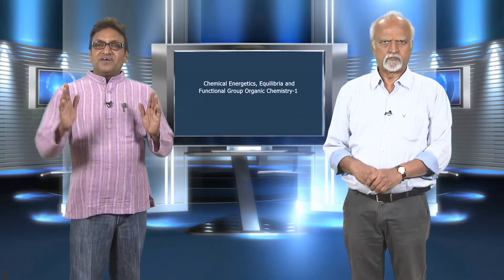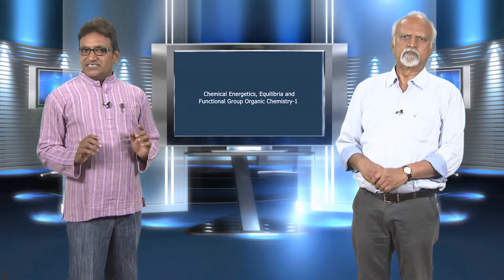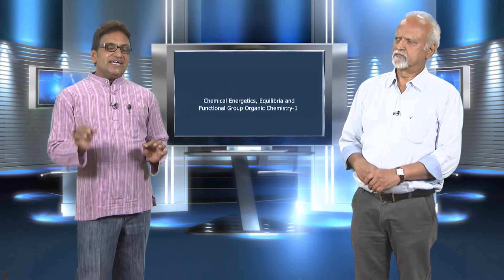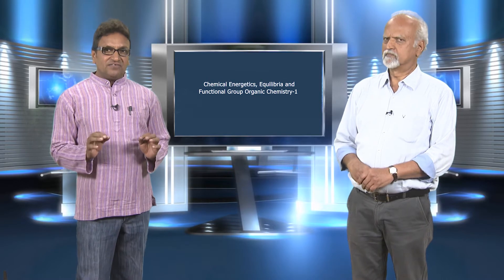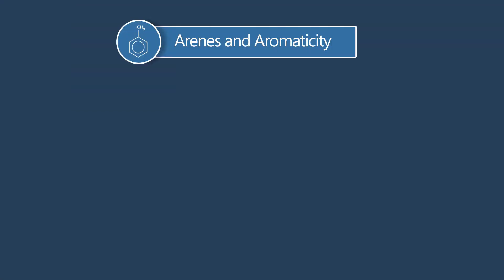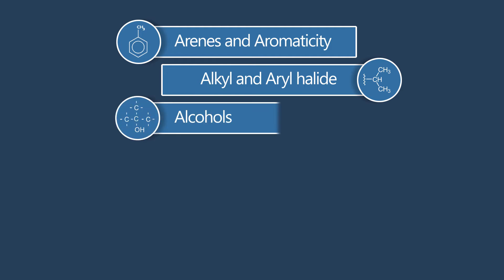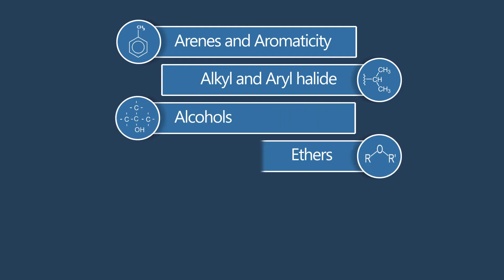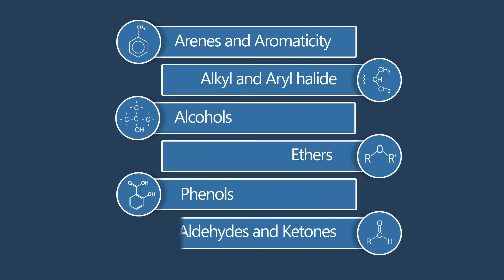In Functional Group Organic Chemistry 1, you will be enlightened with advanced basic chemistry of functional groups, arenes and aromaticity, alkyl and aryl halides, alcohols, ethers, phenols, aldehydes and ketones.